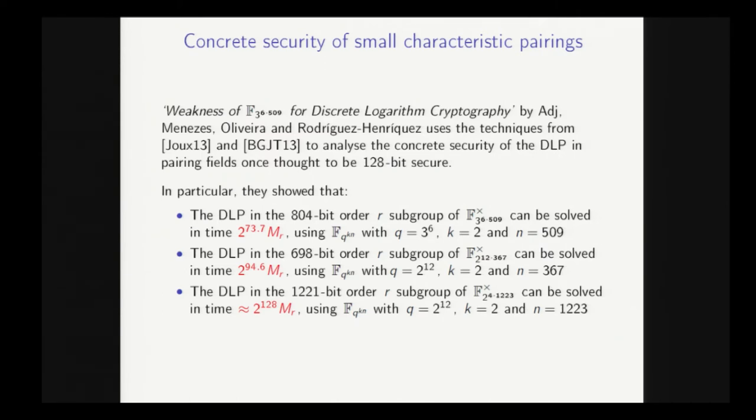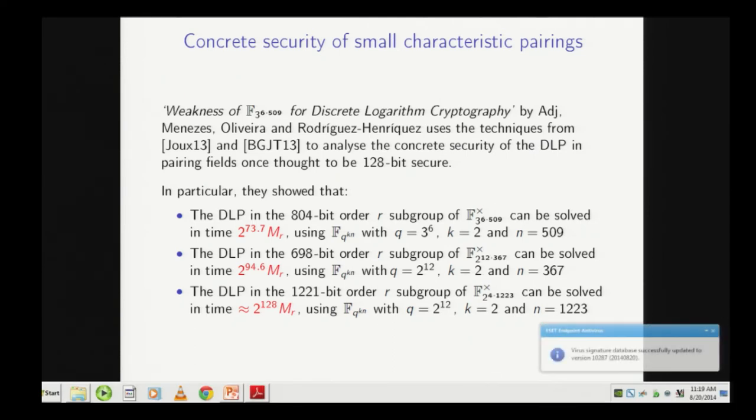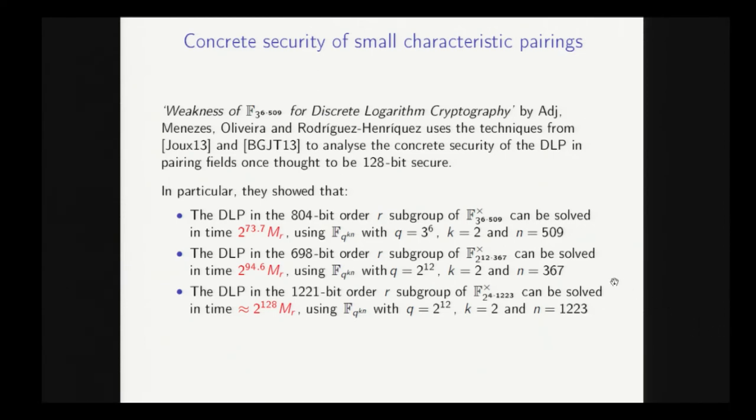And the second one they looked at is this middle one here. This is a genus 2 hyperelliptic curve over F2 to the 367. This has embedding degree 12. And again, rather than 128 bits of security, it only has about 95 bits of security.